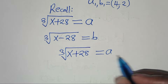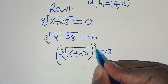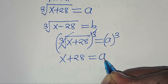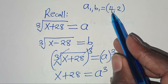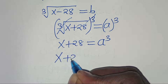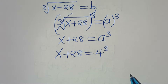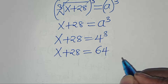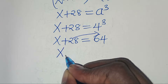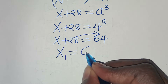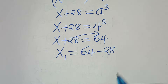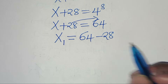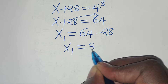From the cube root of x plus 28 equals a, cubing both sides gives x plus 28 equals a cubed. Since a equals 4, we have x plus 28 equals 4 cubed equals 64. Taking 28 to the right-hand side, x1 equals 64 minus 28, which equals 36.